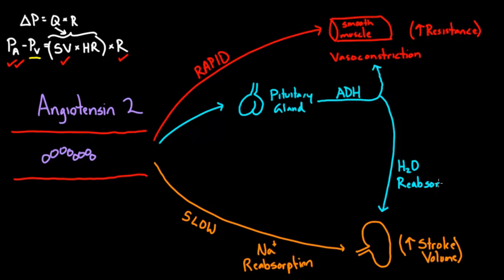But instead of that sodium reabsorption, this ADH actually causes water reabsorption. Now the effect for blood pressure in many ways is going to be similar because if you're reabsorbing water, again your stroke volume will go up. And if your stroke volume goes up, your arterial pressure goes up. So at the end of the day your pressure will still go up, but it's slightly different because it's water reabsorption versus salt reabsorption. And we'll talk about the difference momentarily.